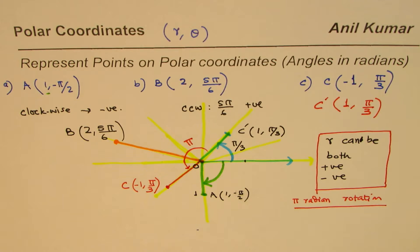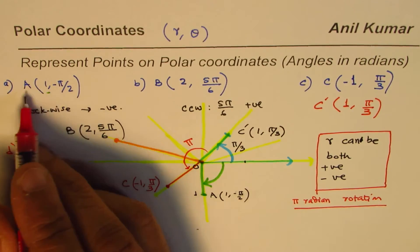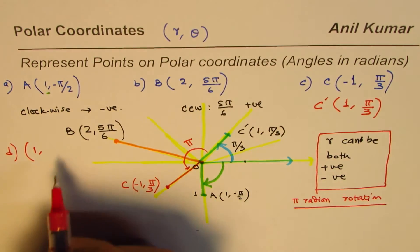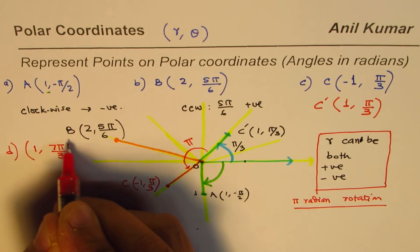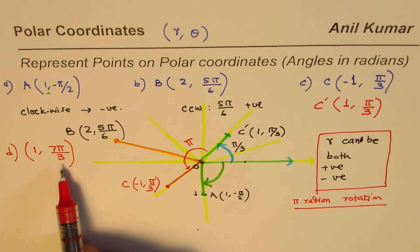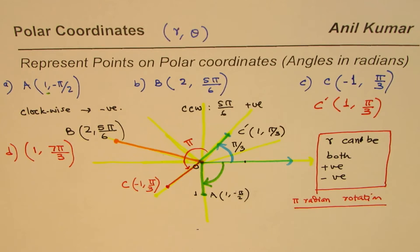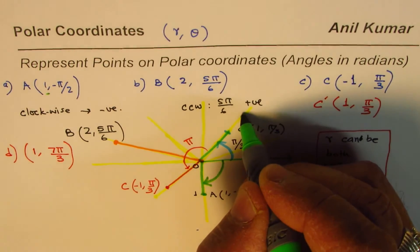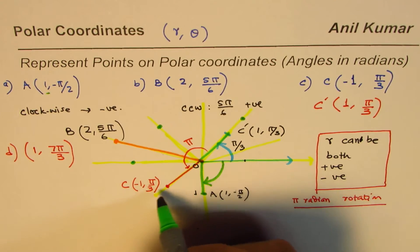Now the practice question: plot point D at (1, 7π/3). First, find the angle 7π/3. Remember to get the angle first before plotting. You can pause the video, think about it, and then plot. Let's look at what 7π/3 means by counting π/3 increments.